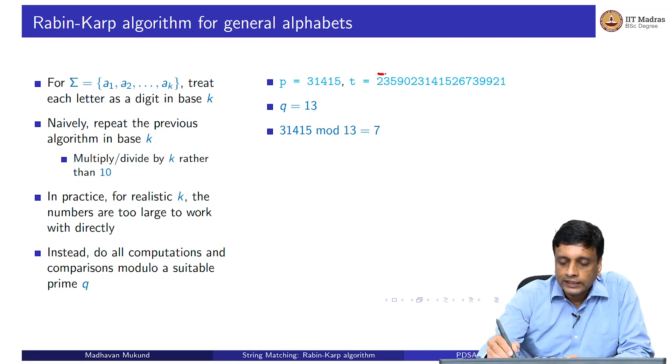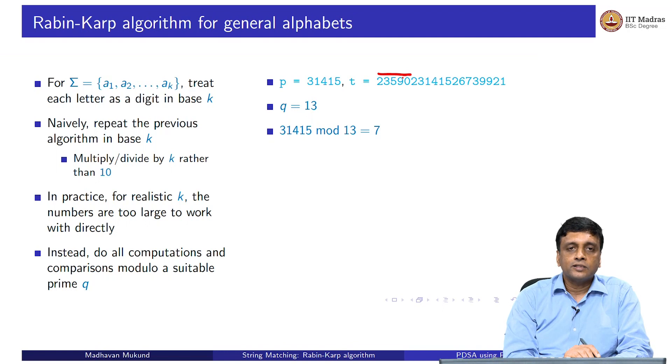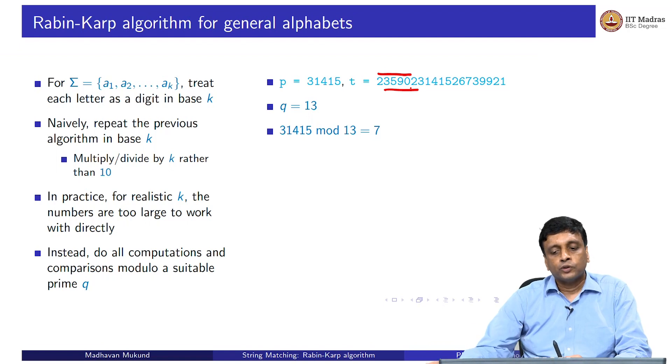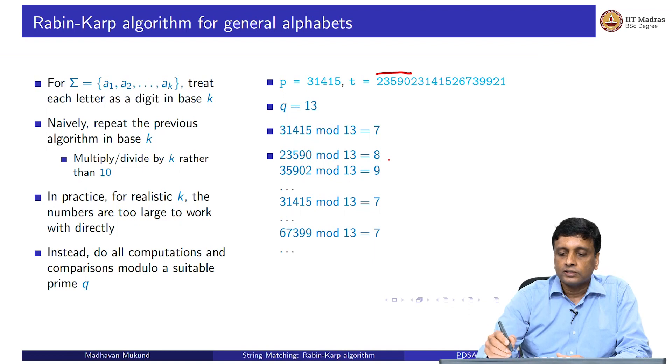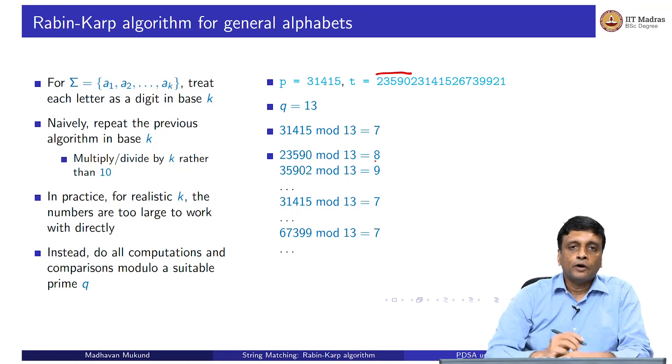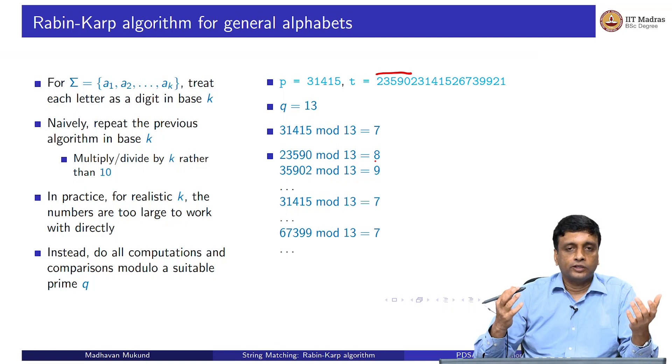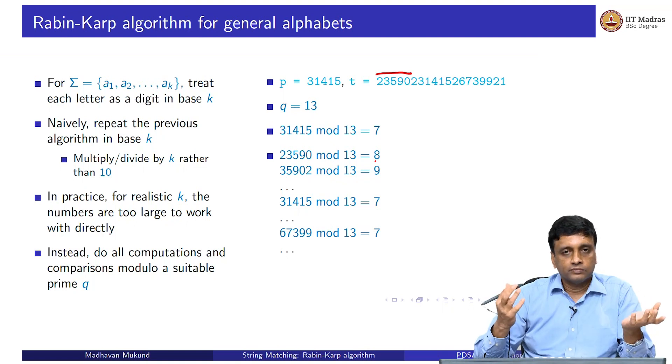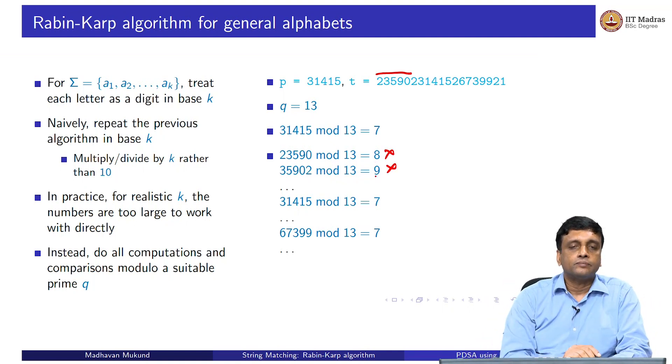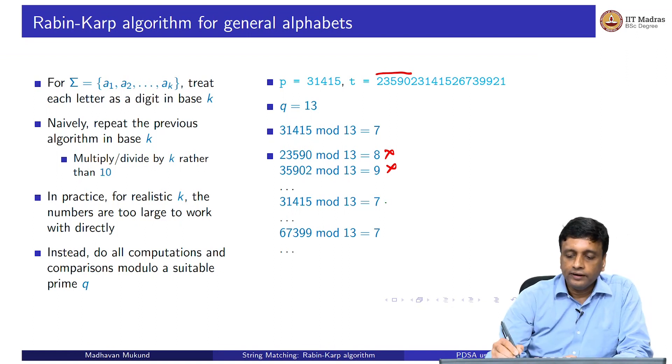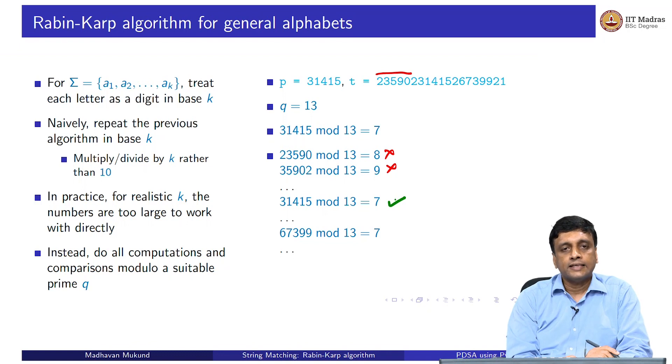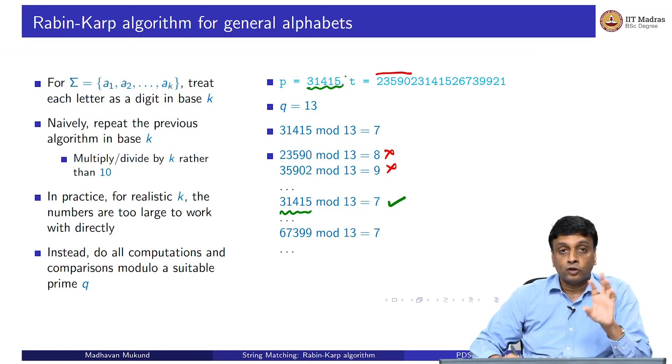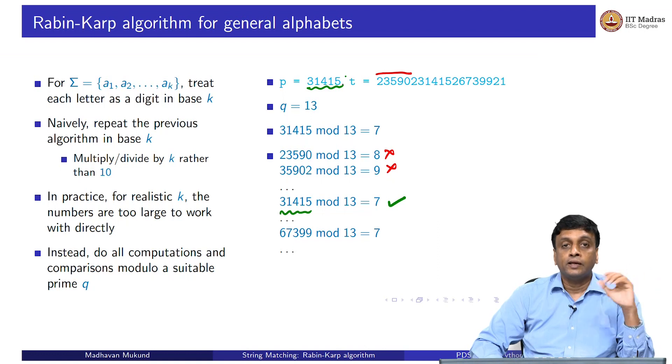Now I have to go through this and I have to check what is the first five characters treated as a number modulo 13. I have to check what is the next five characters treated as a number modulo 13 and go on. It turns out that, for example, the first five characters 23590 modulo 13 is 8. If two numbers have different remainders when divided by 13, they must be different, there is no doubt. So this is not my pattern. As I go down, I find a number whose remainder is the same as my pattern modulo 13. In this case, it so turns out that actually the pattern matches. But remember, I am not checking the pattern, I am only checking the remainder modulo 13. I am only able to check that what I am seeing in my text modulo 13 is what I see in my pattern modulo 13. And the problem now comes that if I go further down and I look at this sequence 67399 and think of it as a number, this is also 7 modulo 13.